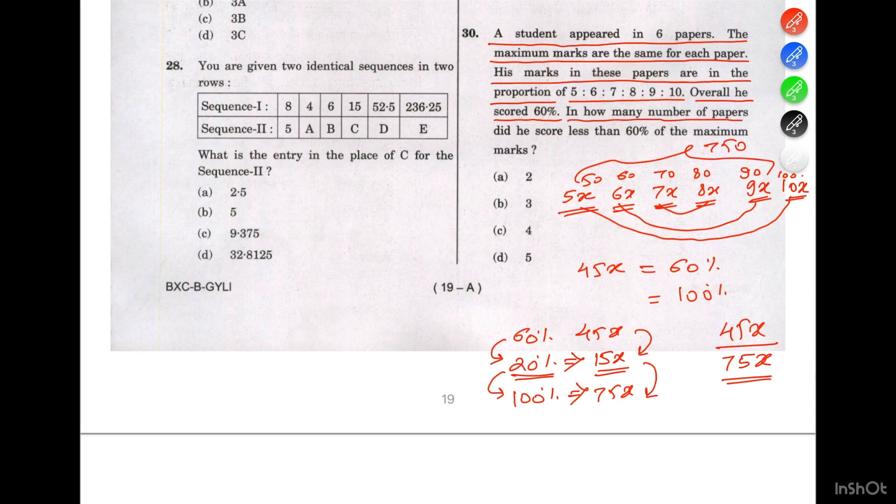They are saying overall he scored 60%. In how many number of papers did he score less than 60%? The overall is 750 and there are 1, 2, 3, 4, 5, 6 - six papers. So we have to divide 750 by 6 to get the score for one exam.